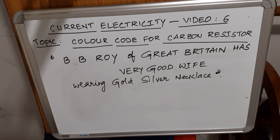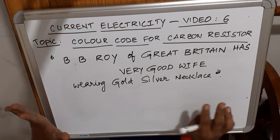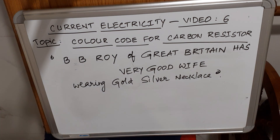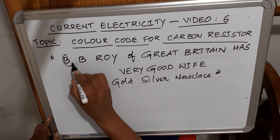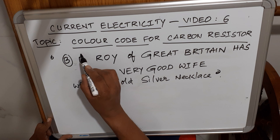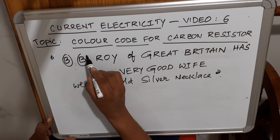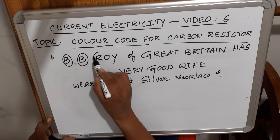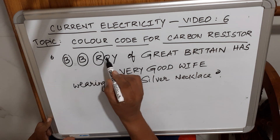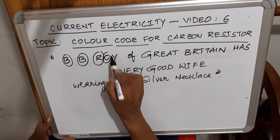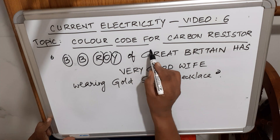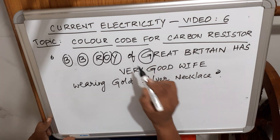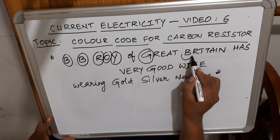The full statement is: 'BB ROY of Great Britain has Very Good Wife Wearing Gold Silver Necklace.' The encircled first letters each represent a particular color in the sequence.